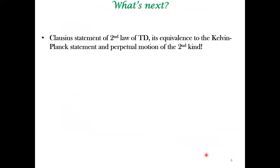In the previous lectures, we discussed heat engines and stated the Kelvin-Planck statement of the second law. In this lecture, we have looked at refrigerators and heat pumps. Connected to refrigerators and heat pumps is a statement of the second law of thermodynamics called the Clausius statement, which we will elaborate in the next lecture. We will also show that the Clausius statement is equivalent to the Kelvin-Planck statement, and using both these statements, we will prove why a perpetual motion machine of the second kind is impossible. Thank you.